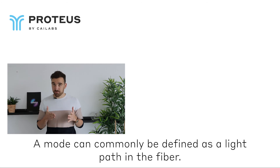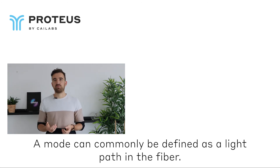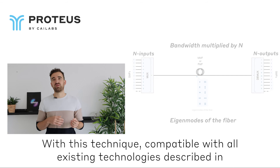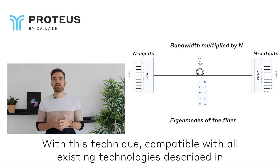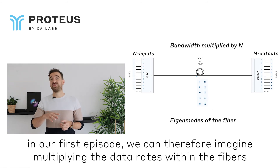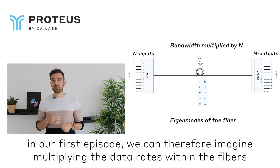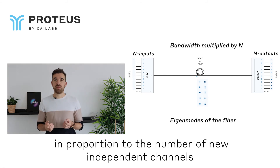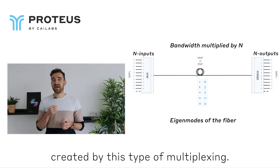A mode can commonly be defined as a light path in the fiber. Using this technique, compatible with all existing technologies described in our first episode, we can therefore imagine multiplying the data throughput within the fiber in proportion to the number of new independent channels created by this type of multiplexing.